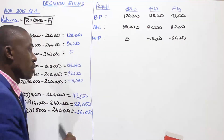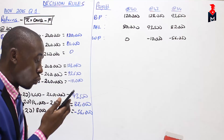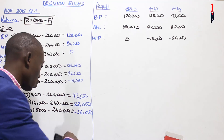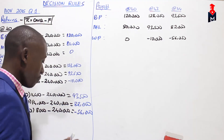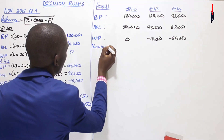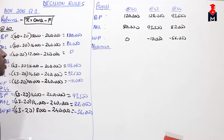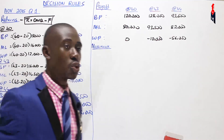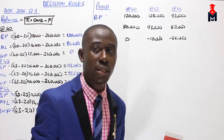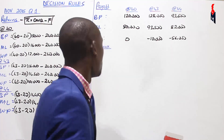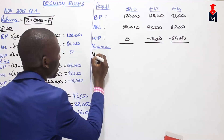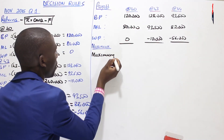To start with, we are told to advise the company on the best selling price to adopt using the MaxiMax decision rule. Working out MaxiMax: if you can recall what we did earlier when we were doing this concept of decision rules, the first thing we do is identify our maximum. We are going to identify our maximum.